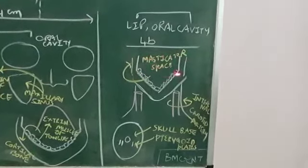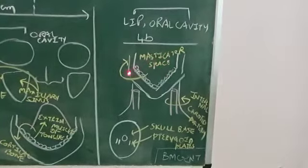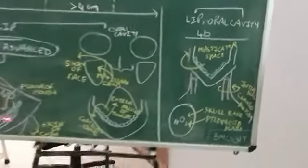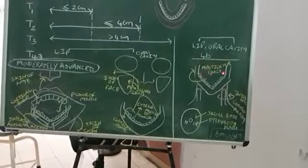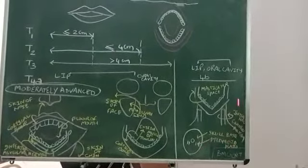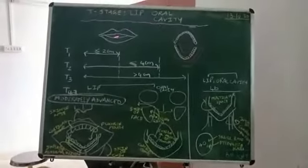So masticator space. Any space involved, it is difficult. It is the worst thing. Why? Because the spread occurs rapidly. So that is why hard ones are given T4A like cortical bone, etc. And soft spaces and soft structures like internal carotid artery, masticator space, and skull base and pterygoid plates are all given T4B status. So this completes the lip and oral cavity T stages.